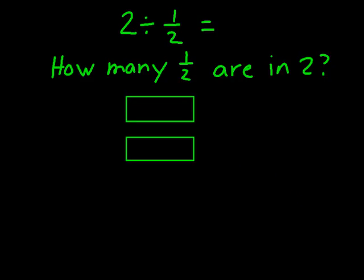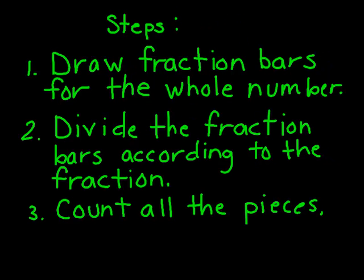And then I'm going to divide my fraction bars into halves. Finally, we're going to count all the pieces that we now have in our 2 wholes. And I see we have 1, 2, 3, 4 pieces in our 2 wholes, so 2 divided by 1 half equals 4. 4 would be our quotient.